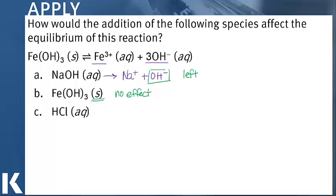In our final example, we have hydrochloric acid. Hydrochloric acid will dissociate into hydrogen ions and chlorine ions. What will happen here is these hydrogen ions will end up reacting with the hydroxide in the products. And this will be a neutralization reaction, making water.